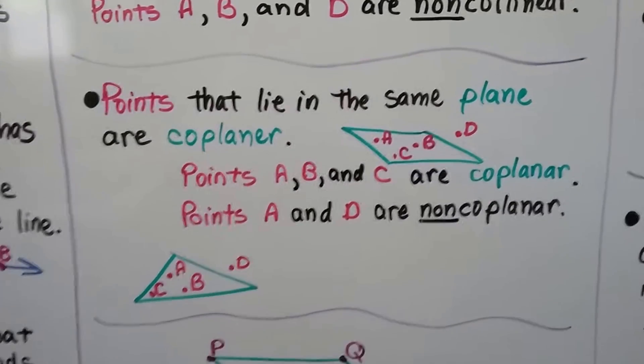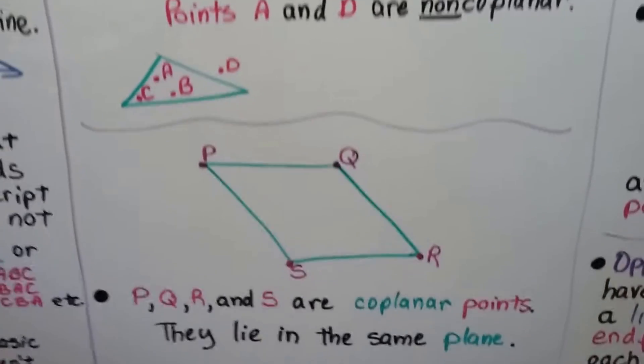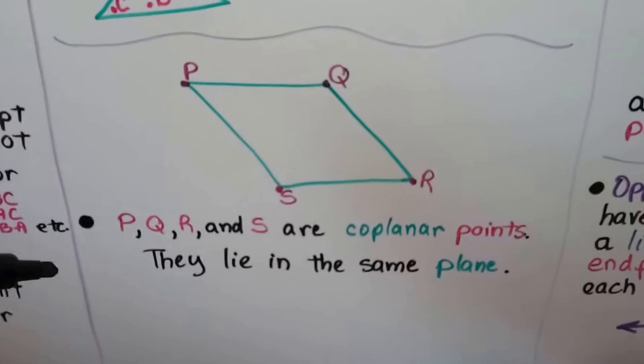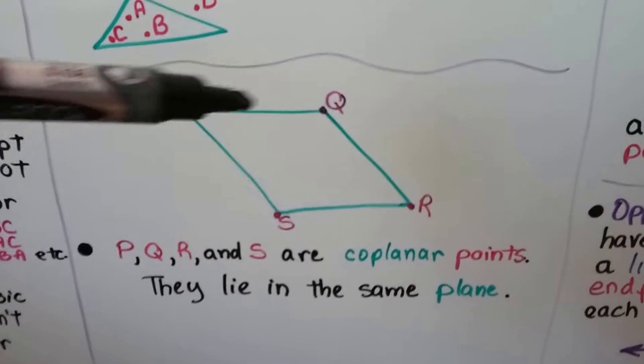We can even have a triangular-shaped plane. Here we have P, Q, R, and S. They're coplanar points. They lie in the same plane.